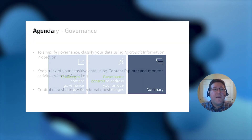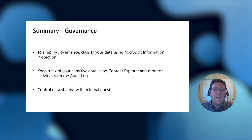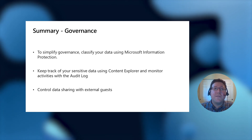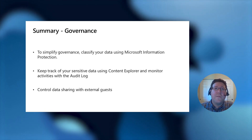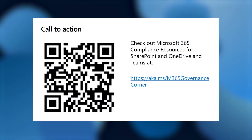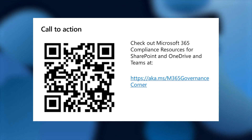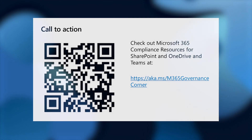To sum up: to simplify governance, a great first step is to classify your data using Microsoft Information Protection Labels. Once you do that, you can keep track of your sensitive data using the Content Explorer and monitor activities and set up alerts with the audit log. You can also control how data is being shared outside of your organization to guests or business partners using the tools available in the SharePoint Online Admin Center. If you want to learn more, take a look at the Microsoft 365 Governance Corner for more information. Thank you very much for listening today.